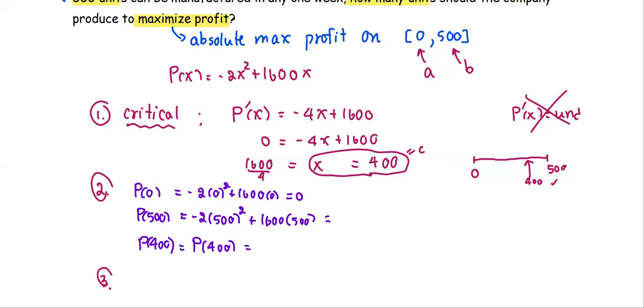we get P(500) = 300,000 and P(400) = -2(400)² + 1600(400) = 320,000.